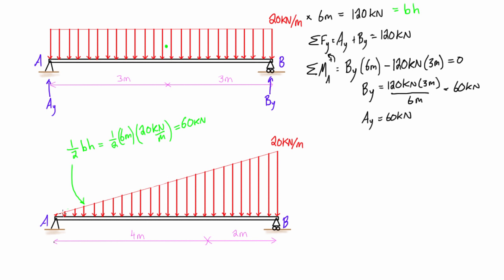For the centroid location, recall that for a triangle the centroid lies two-thirds of the way from the short side, or one-third from the tall side. So the centroid's x-bar is 4 meters from A. We don't need the height — just the horizontal distance, because we'll pass the total 60 kilonewton force through that centroid in the moment equation.